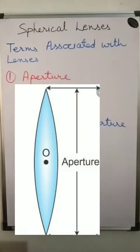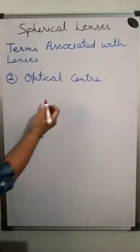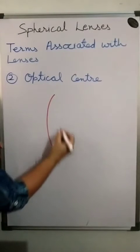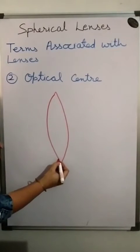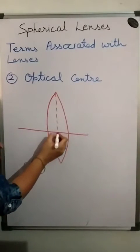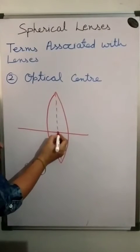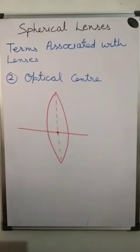Next is optical center. Suppose this is your convex lens. This central point on the lens is called the optical center. It is a point on the principal axis such that a ray of light directed towards this point passes undeviated through the lens.